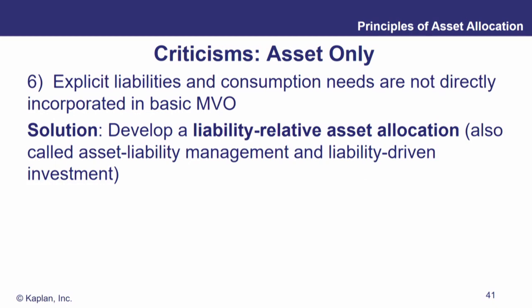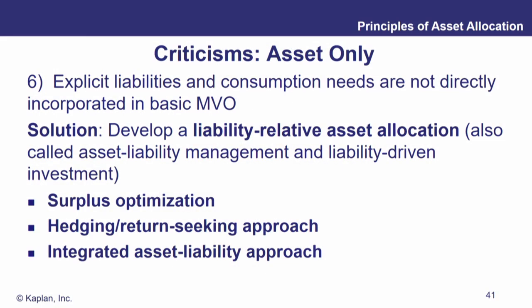Instead of an asset-only optimization, you want to develop a liability-relative asset allocation. For a pension fund, where is the surplus? Are we in surplus or deficit, and what is the progression of that surplus and deficit over time? We can only get a sense of that by modeling both the assets and the liabilities. This is also called ALM — Asset Liability Management. Anything that talks about investment from a liability-driven perspective falls into this category, including integrated asset liability approaches.